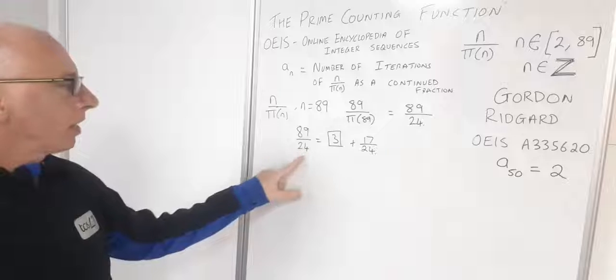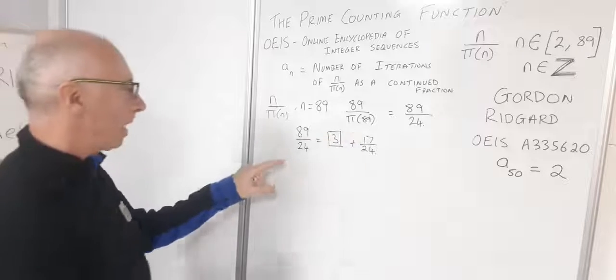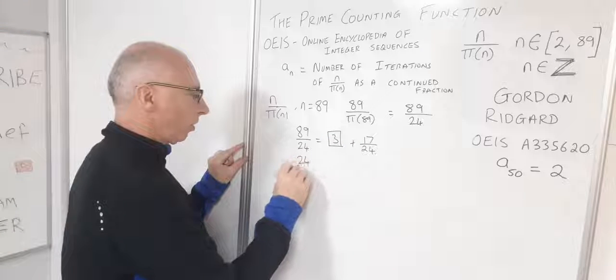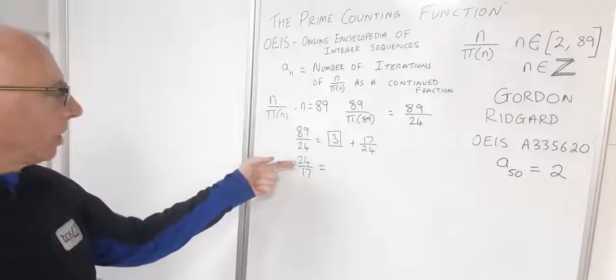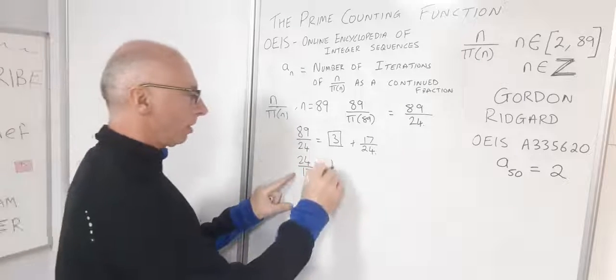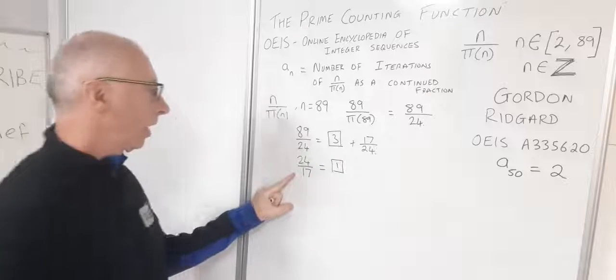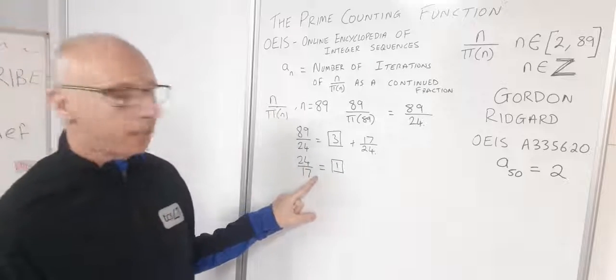Now bring this down to here in reciprocal format. So now we've got 24 over 17. The integer part of this is going to give us 1 and then our leftover is 7 over 17.